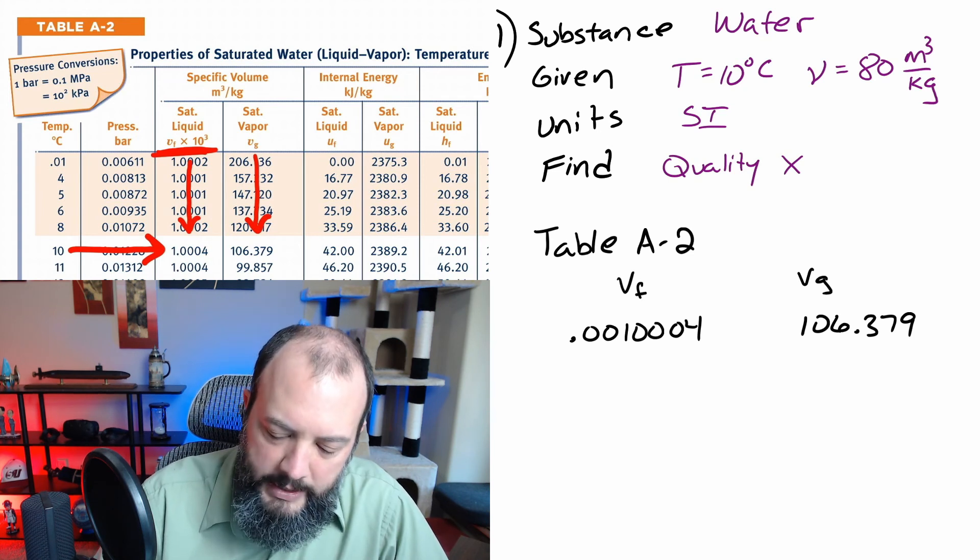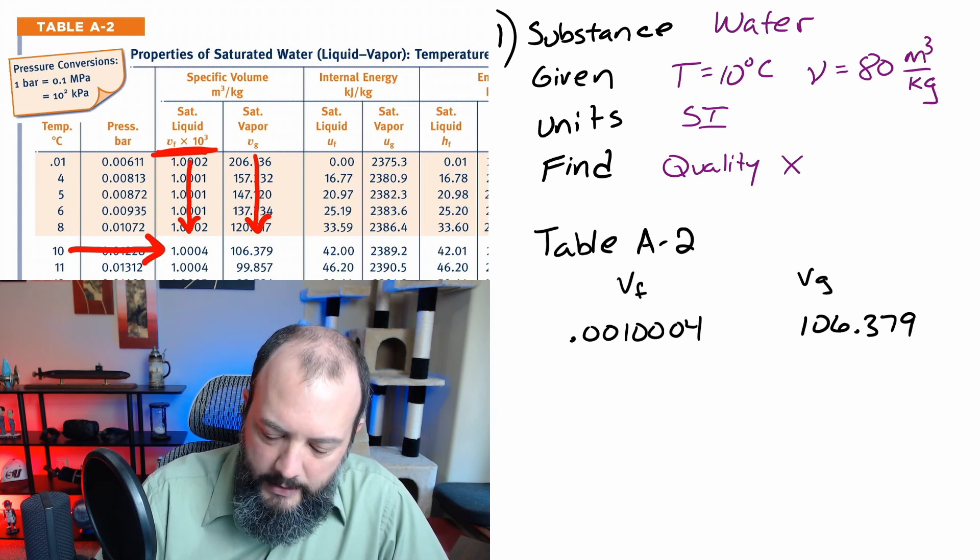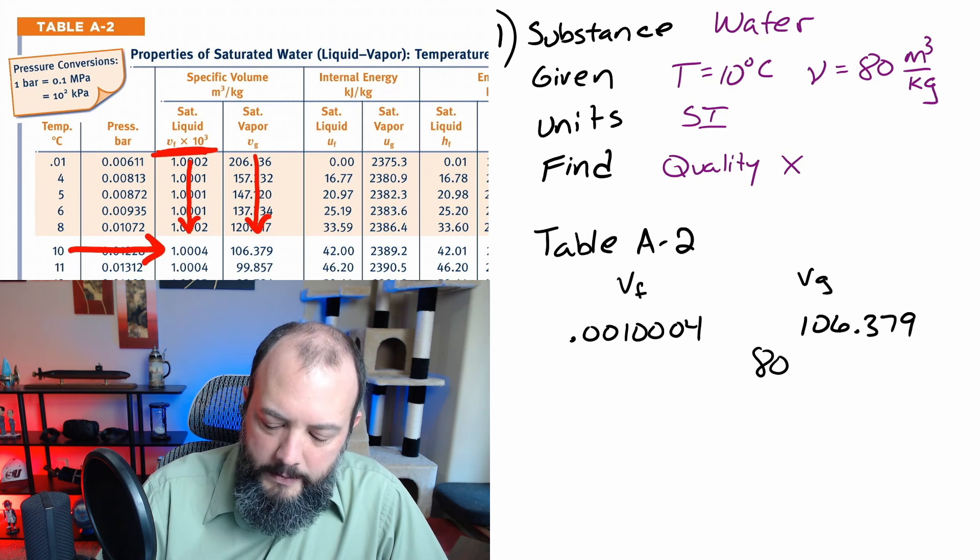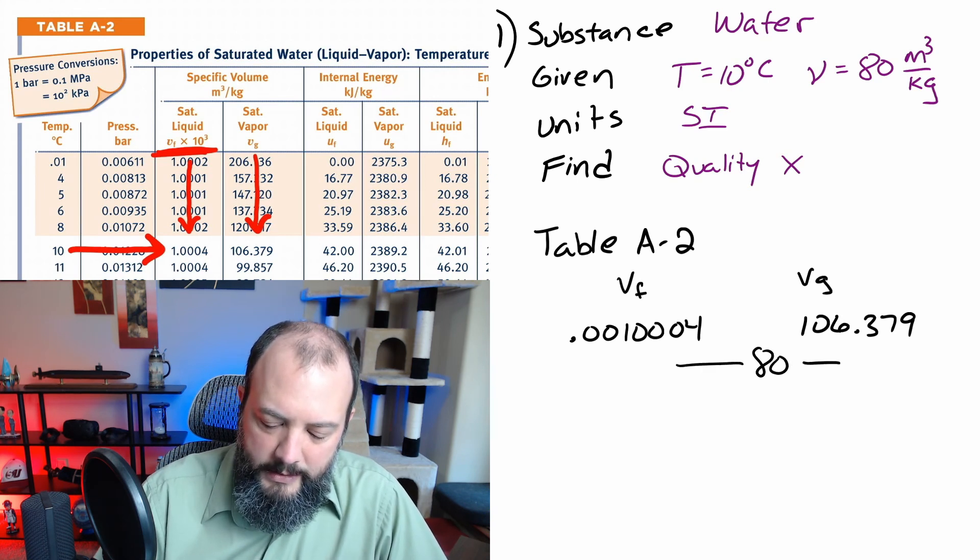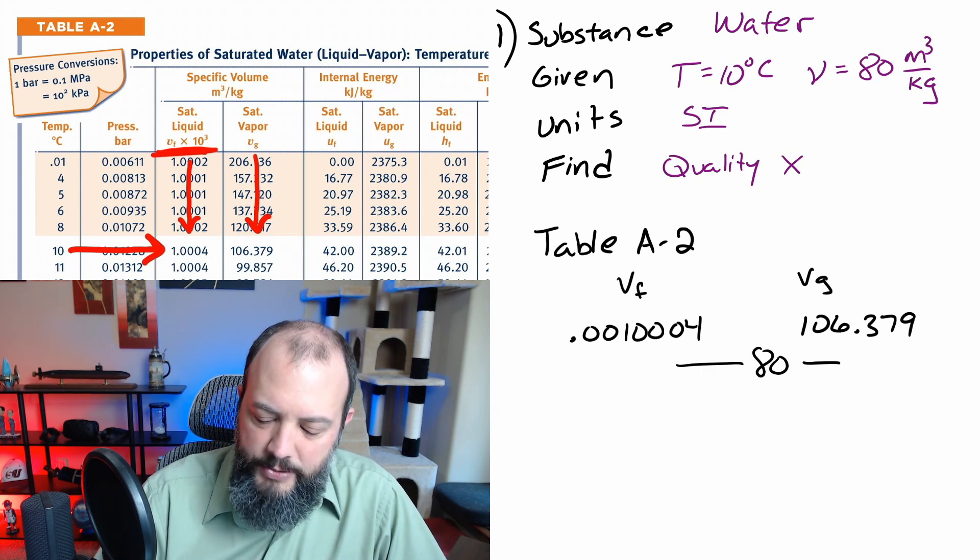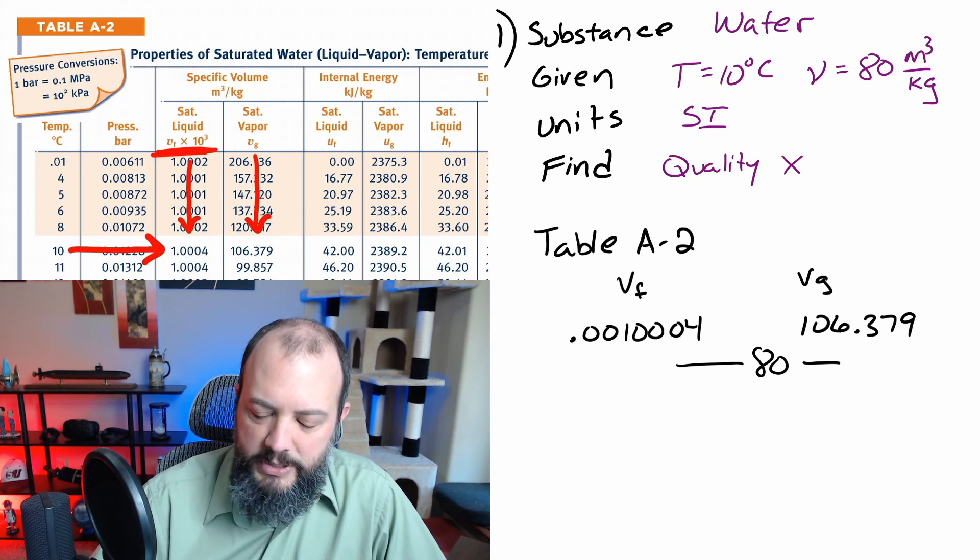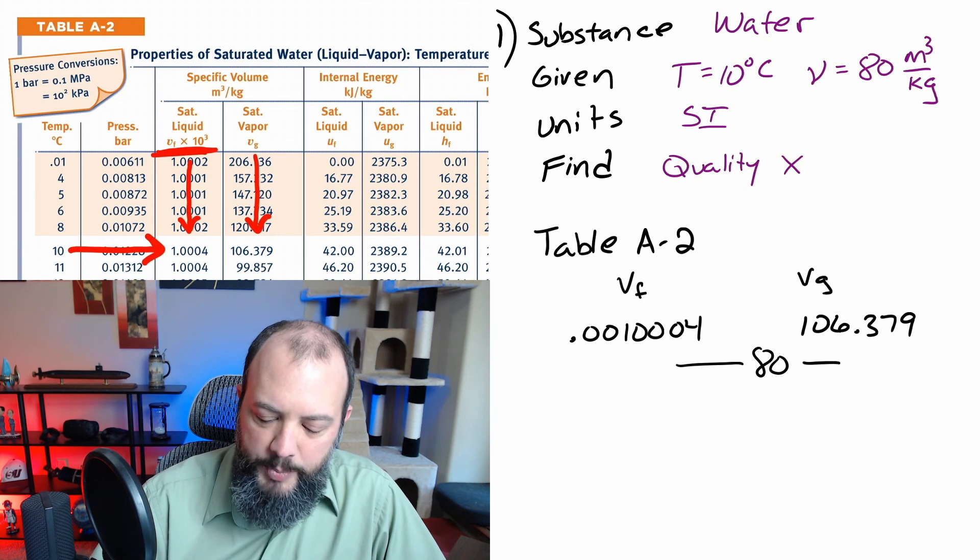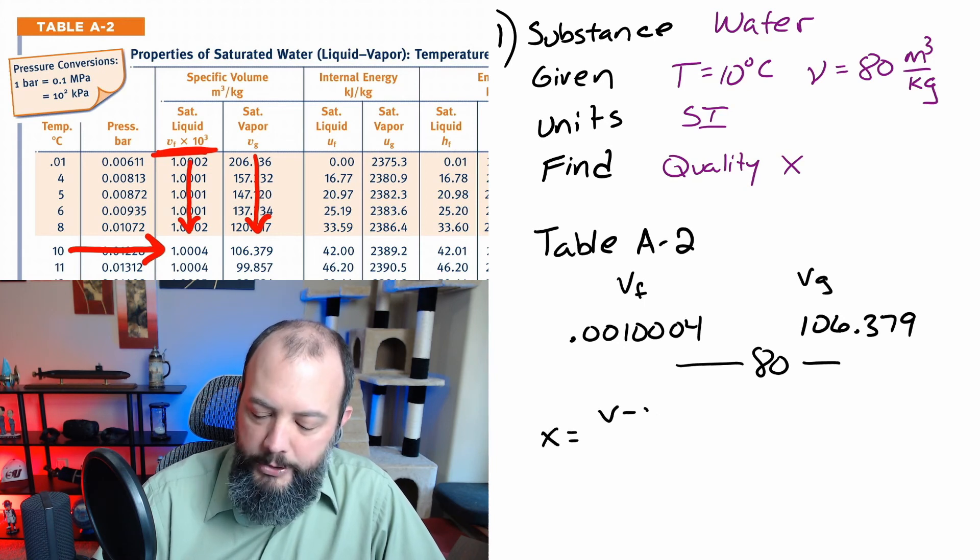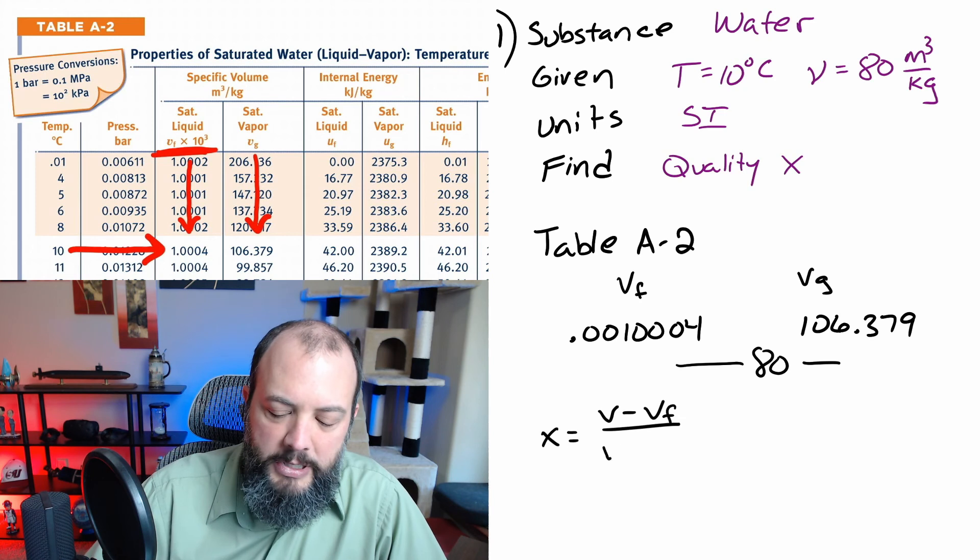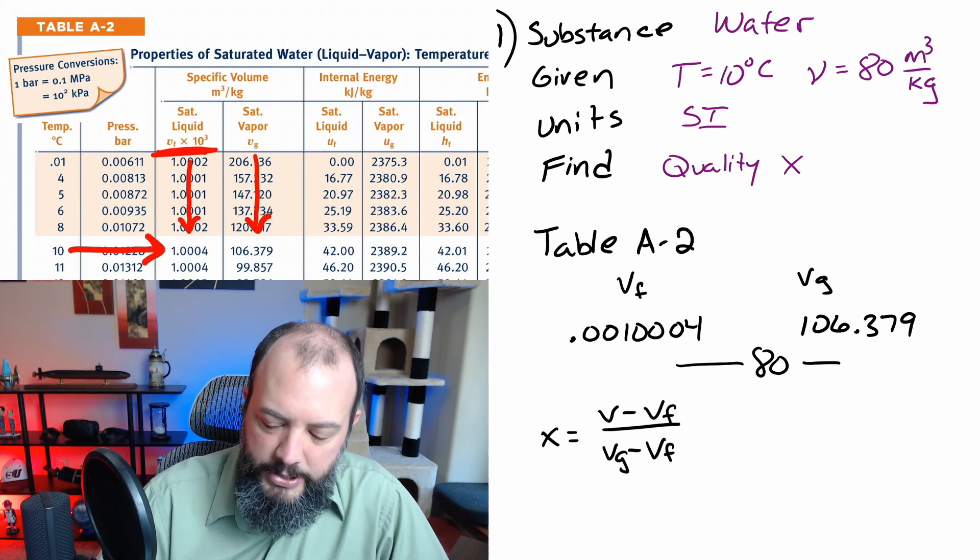And so in finding quality you're essentially asking for this number 80 which is between the saturation fluid and saturation gas value you want to know what percentage of the way is it towards gas. A quality of 0 would be exactly at the fluid value. A quality of 1 or 100 percent would be exactly at the gas value. So you'll set this up using a ratio.